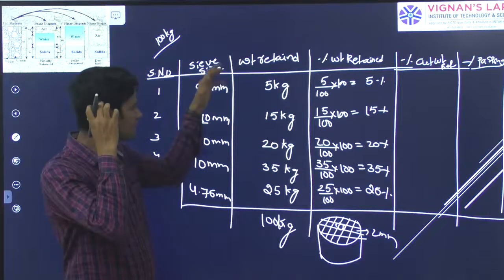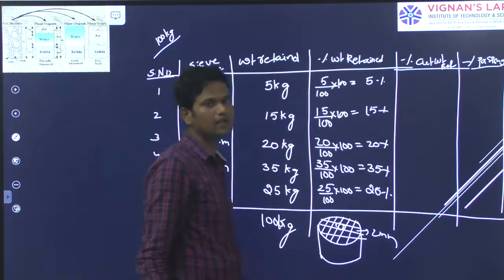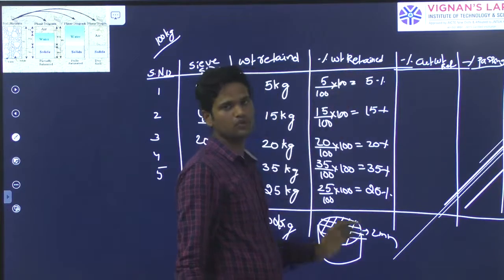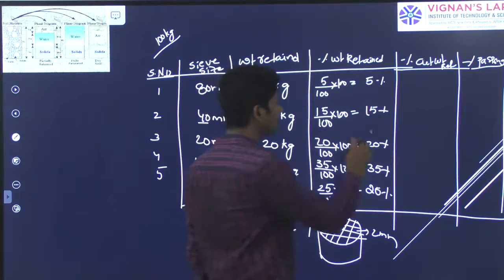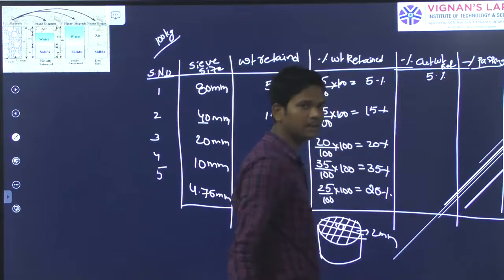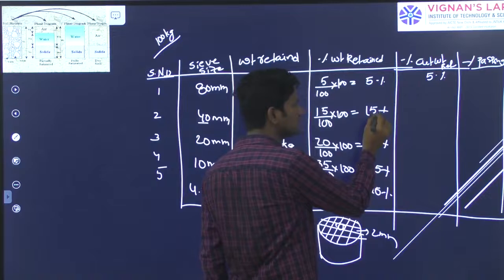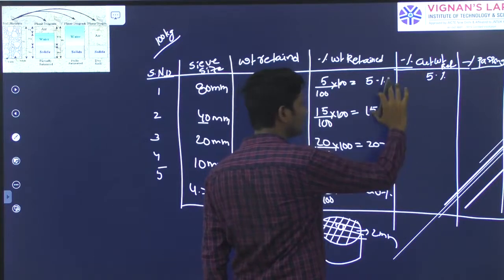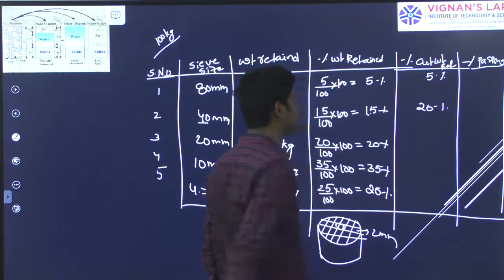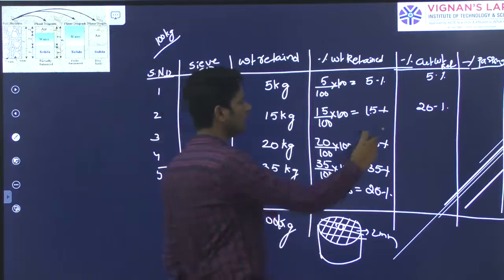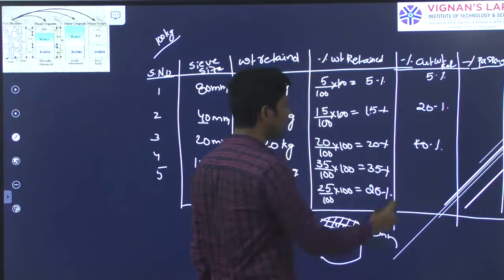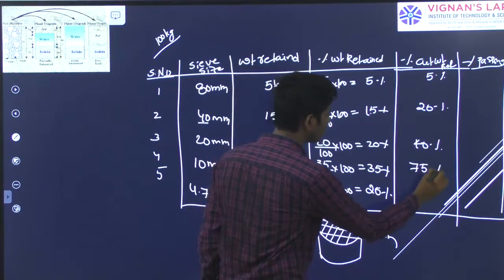The percentage cumulative weight retained is the comparison of one sieve with respect to all sieves above it. For the first sieve (80 mm), the percentage cumulative weight retained is 5 percent. For the second sieve (40 mm), it is the combination of the first and second sieve: 5 plus 15 equals 20 percent. For the 20 mm sieve: 20 plus 20 equals 40 percent. For the 10 mm sieve: 40 plus 35 equals 75 percent.